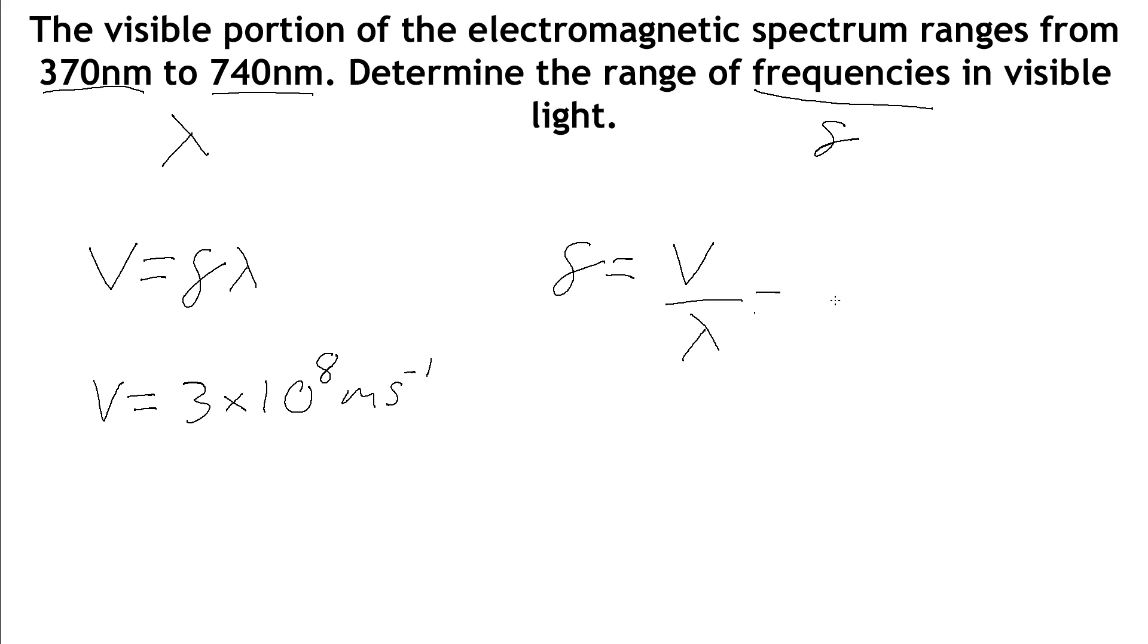We can put in 3 times 10 to the 8 and divide by 370 nanometers, which is 370 times 10 to the minus 9 meters or 3.7 times 10 to the minus 7 meters. Stick this into a calculator and we get a frequency of 8.1 times 10 to the 14 hertz. The visible spectrum has quite high values for frequency.